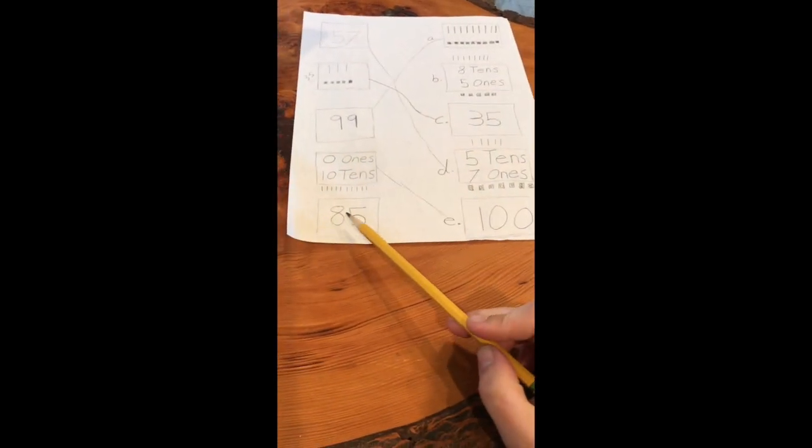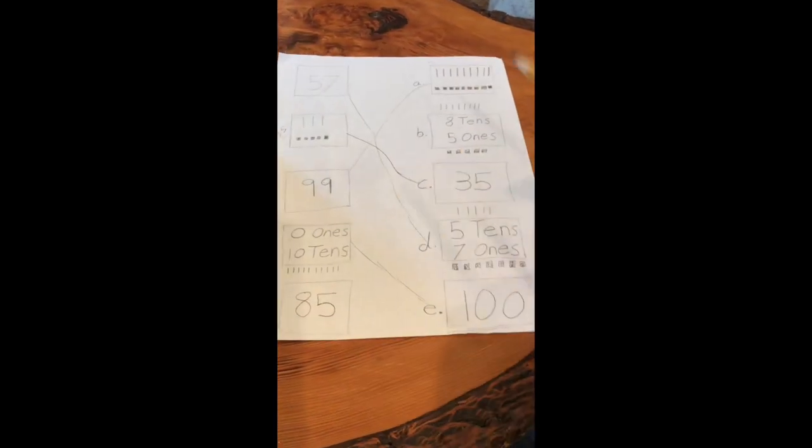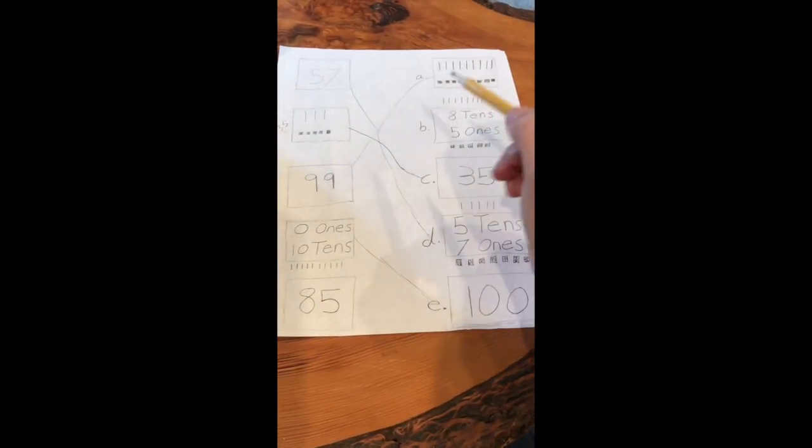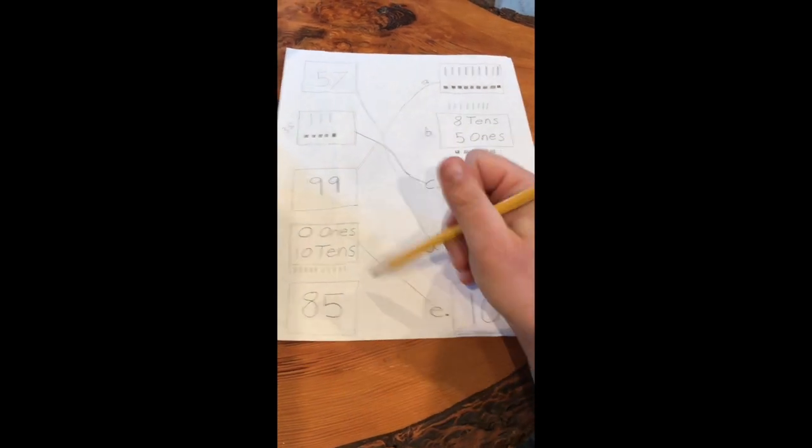Now, our last number is 85 and it goes to the last one, which we already decided was 85 because there are eight tens and five ones.